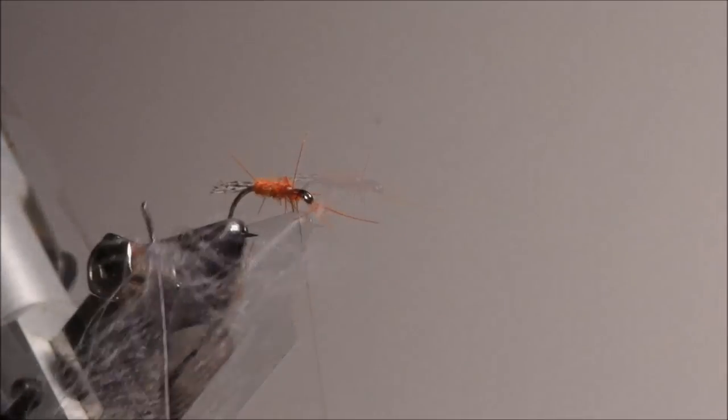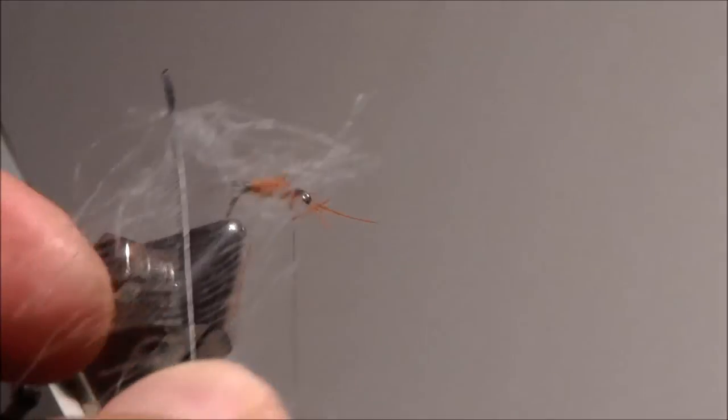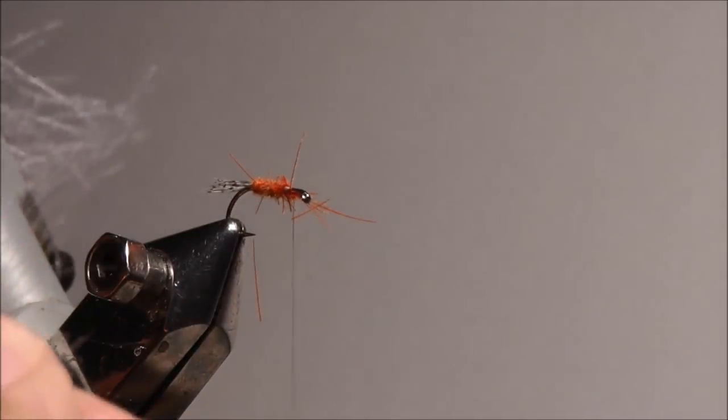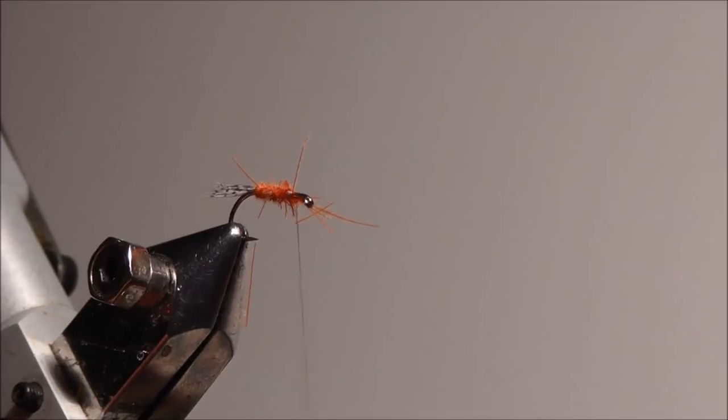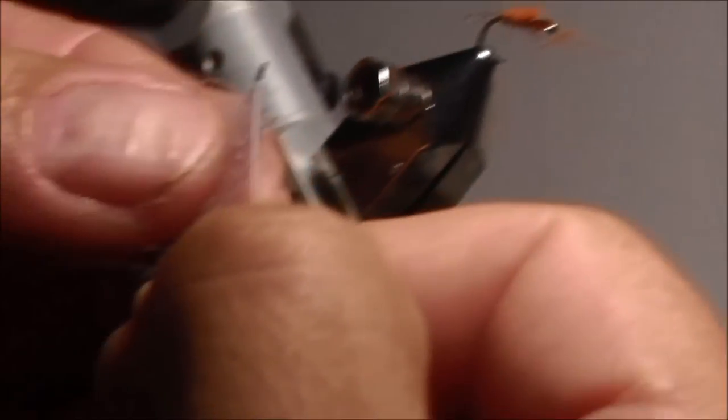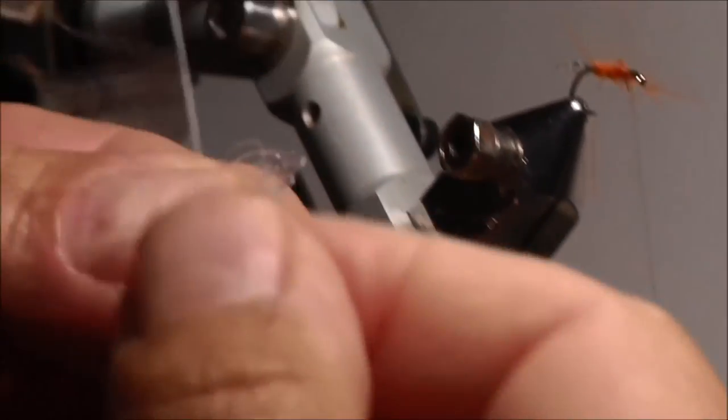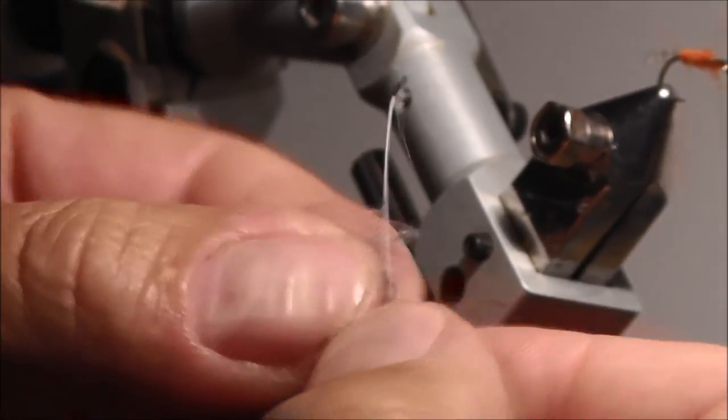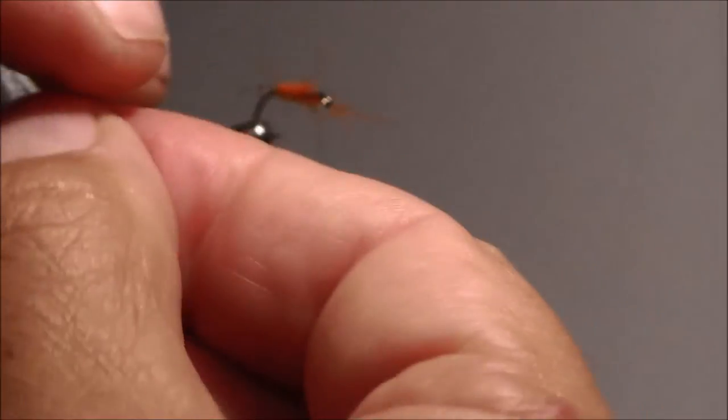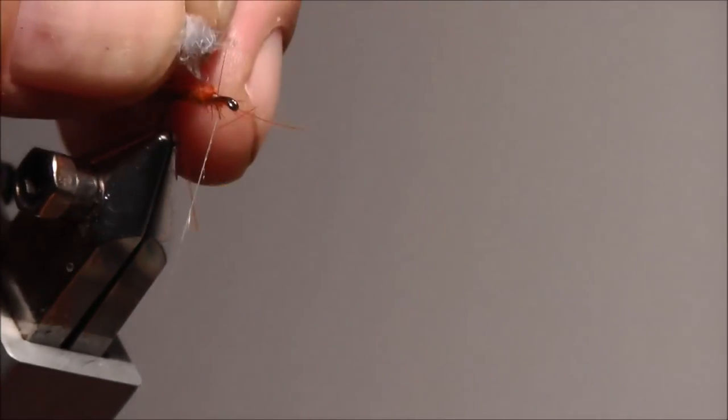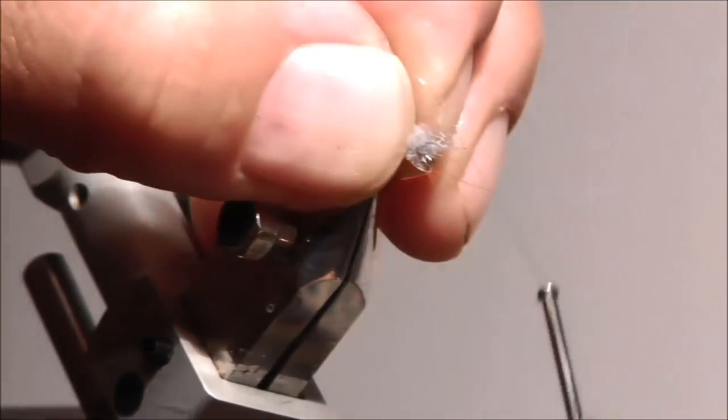Okay, for the wing I use a different color of CDC and I pull off the barbs, just like that. I grab them all together so I've got a bit of a bunch, and I just tie them in.